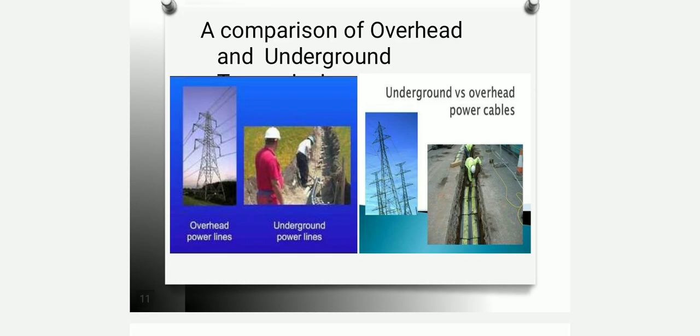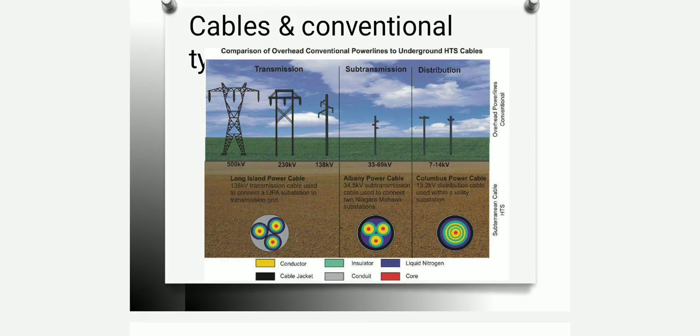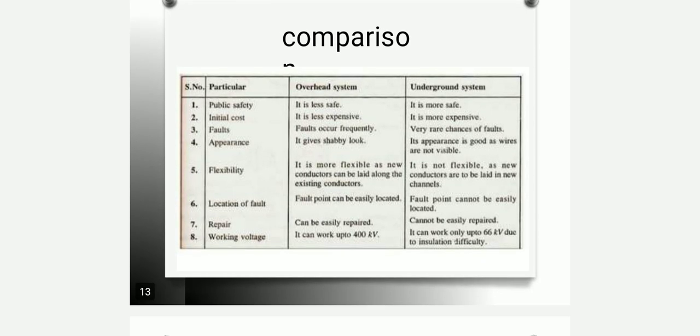Now we will see the comparison of overhead and underground cables, specifically overhead power lines versus underground HTS cables. This diagram shows transmission, sub-transmission, and distribution for overhead lines at the top, and the underground cable equivalent below it. In the comparison table: with respect to public safety, the overhead system is less safe whereas the underground system is more safe. For initial cost, overhead is less expensive and underground is more expensive. Faults occur frequently in overhead lines as cables are laid over towers, while faults rarely occur in underground systems.